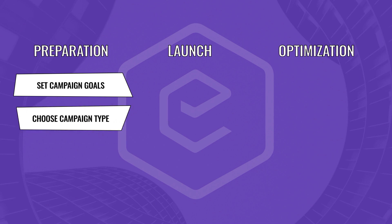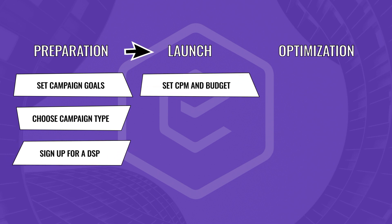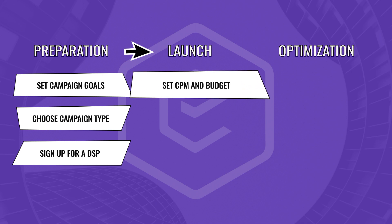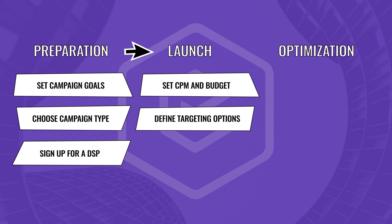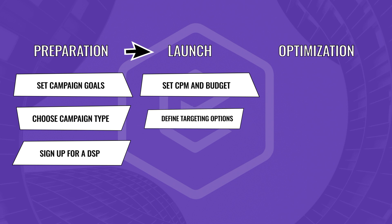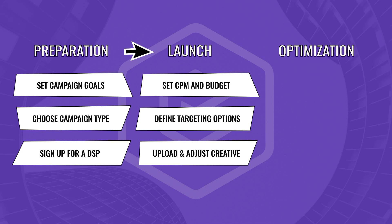Then you sign up for a DSP and adjust the basic account settings. During the launch stage, you set CPM and budget for your campaign, define basic targeting options like language, geo, device, and browsers. After this, you proceed to creative upload and adjustments, where you also set up banner targeting and frequency capping options.